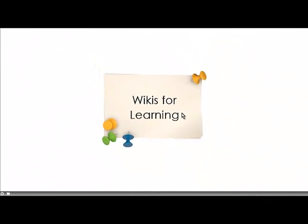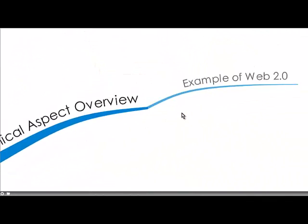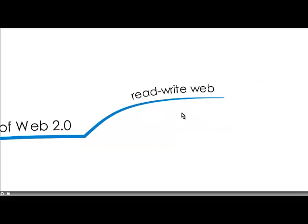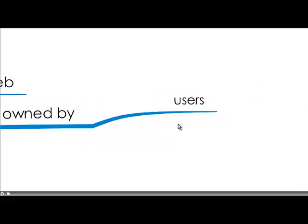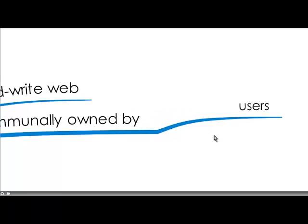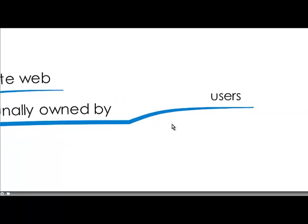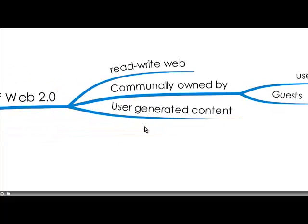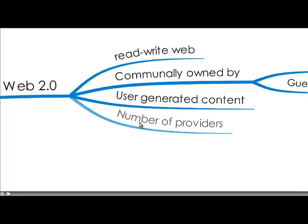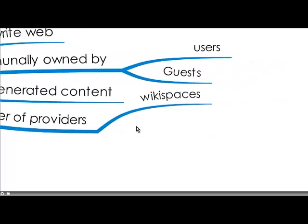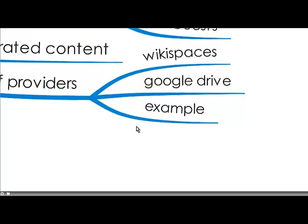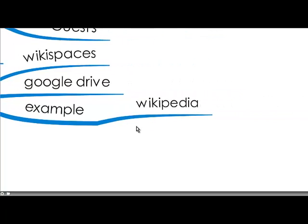Hey everyone, it's Jo. Today we're looking at wikis for learning. So what are the technical aspects? Well it's an example of Web 2.0, which is Read Write Web — very difficult to say. It's really communally owned by both users and guests if you have the link and it's been shared publicly. It's user-generated content and there are a number of providers like Wikispaces and Google Drive, and Wikipedia would be the best example — the largest wiki on the planet.